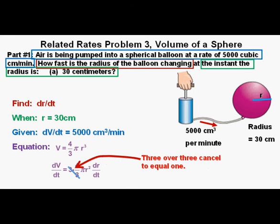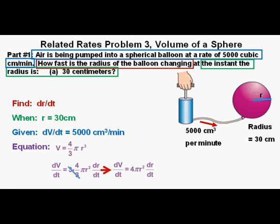3 over 3 cancel to equal 1. So we have dV/dt equals 4 π r squared dr/dt.